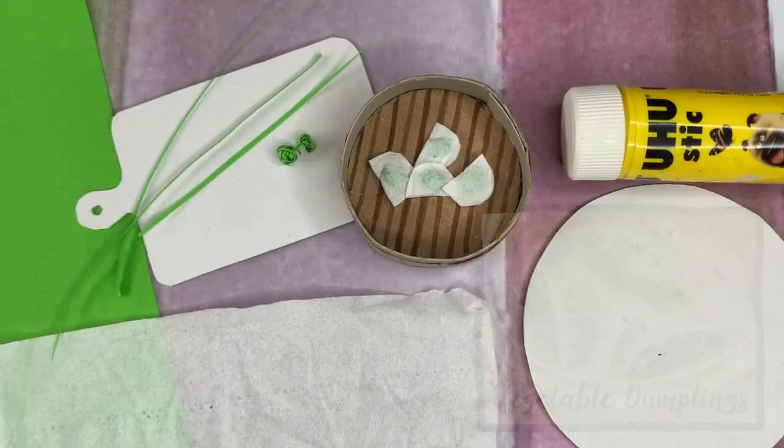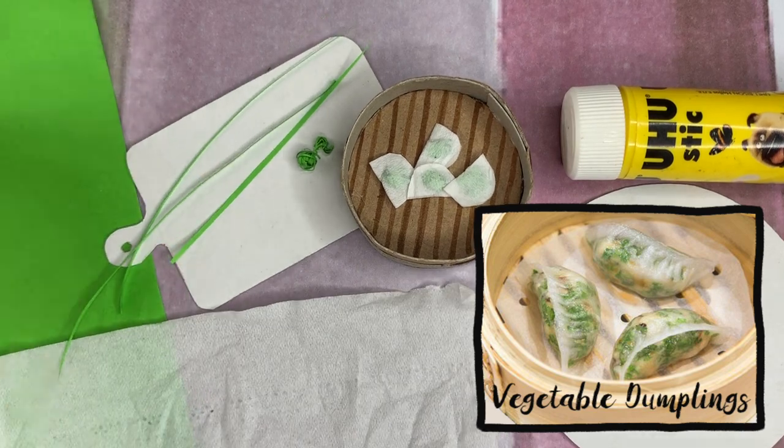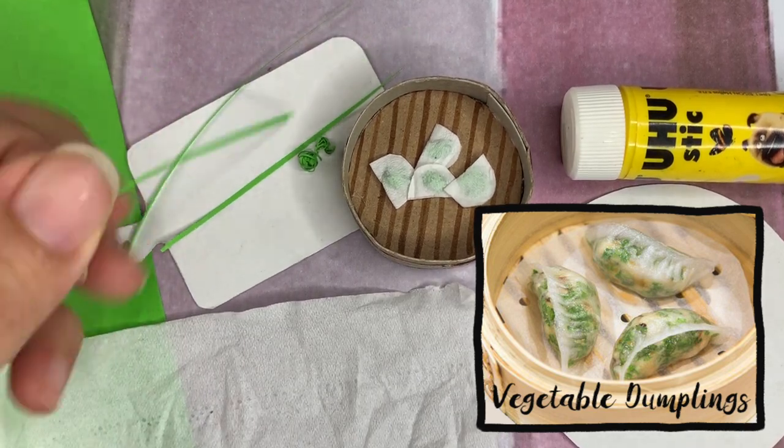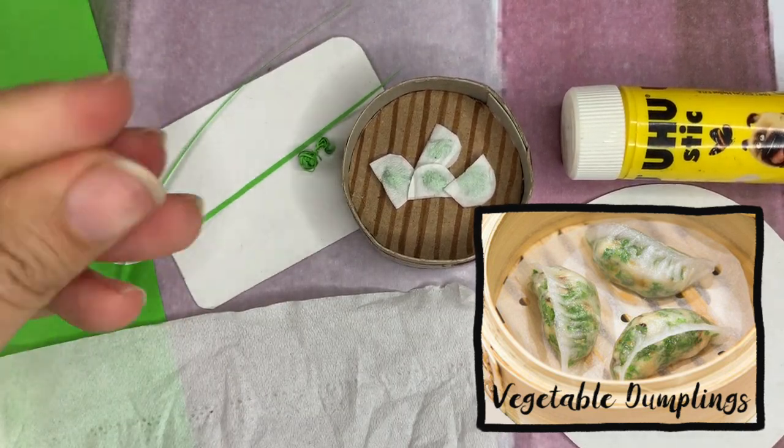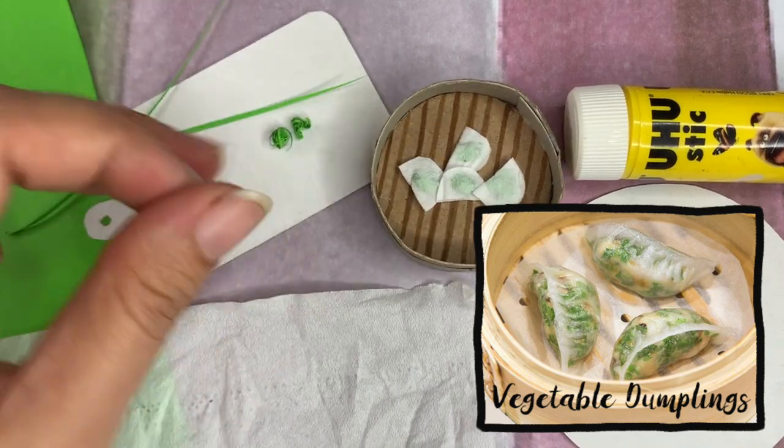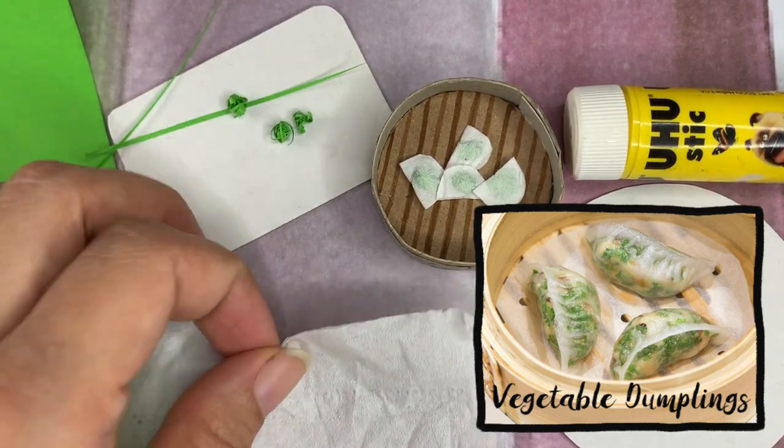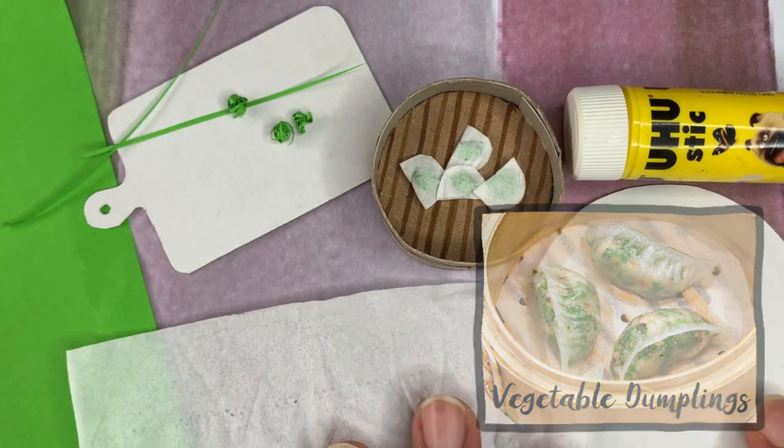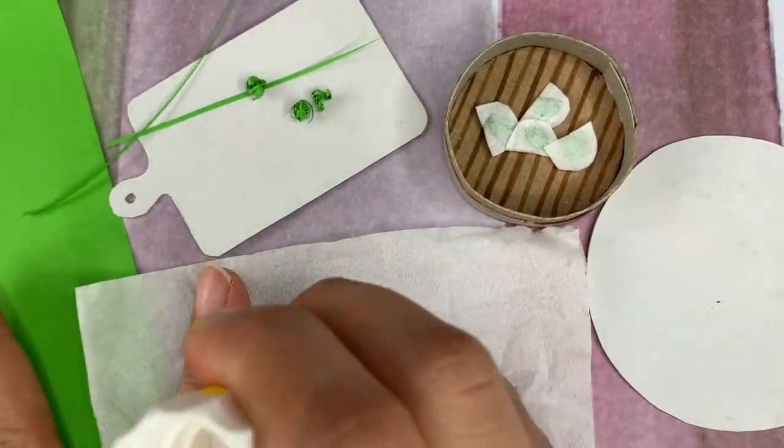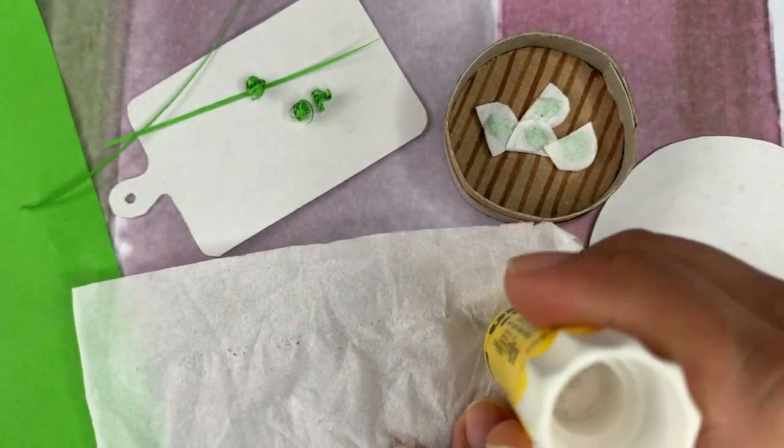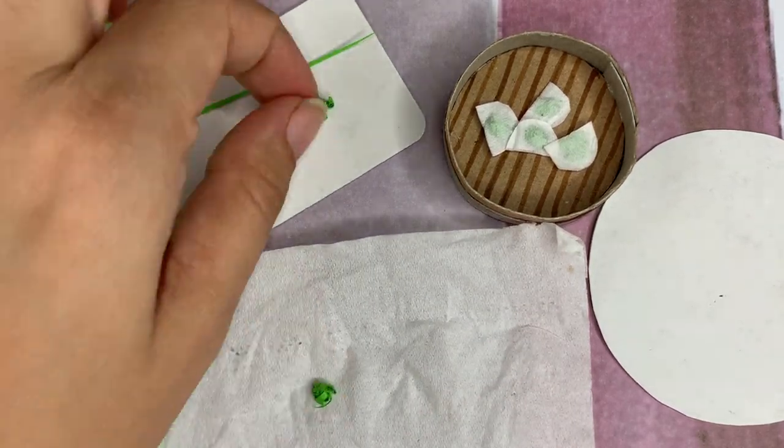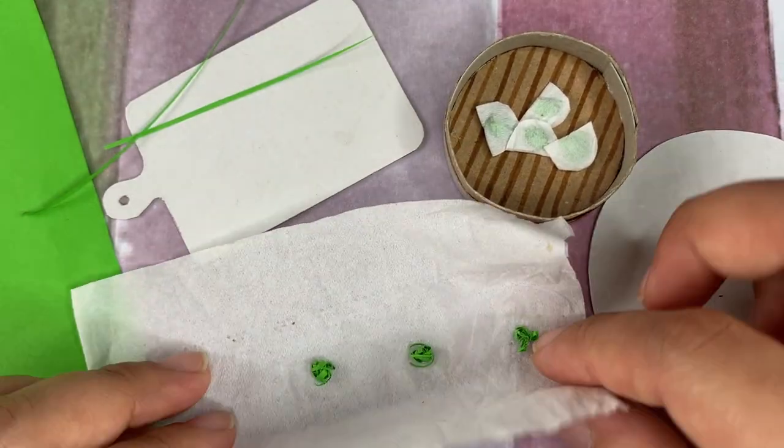Menu number 3, vegetable dumpling. You will need some colored paper, and of course it's green if you want it to be a vegetable dumpling or maybe orange if you want it to be a shrimp dumpling. And I'm using a piece of tissue paper because I want it to be a little bit transparent like a real dumpling.